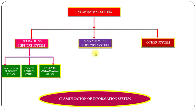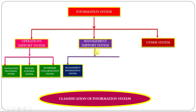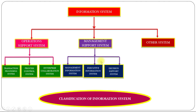Management support system is further divided into three: management information system, executive information system, and decision support system — that is, MIS, EIS, and DSS.